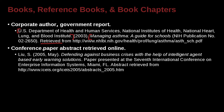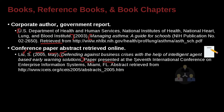On the reference list, we'd have the author — last name, first name. Then we have the year and the month of the conference, because conferences happen at a specific time. Then we have the name of the paper or abstract being presented: 'Defending against business crises with the help of intelligent agent enterprise information system-based early warning solutions.' That starts with a capital D, and the rest of the letters are all lowercase. Then we write 'paper presented at the Seventh International Conference on Enterprise Information Systems' — that's the name of the conference.